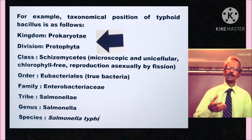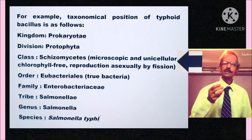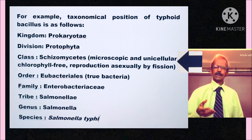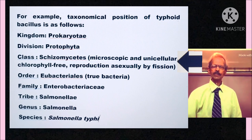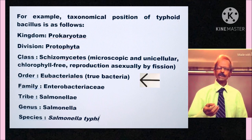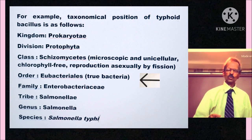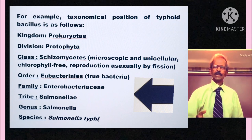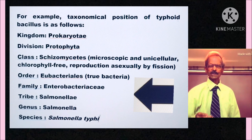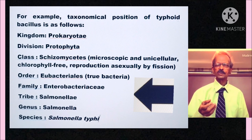Kingdom: Prokaryote. Division: Protophyta. Class: Schizomycetes, meaning microscopic, unicellular, chlorophyll-free and reproduction by asexual fission. Order: Eubacteriales, meaning true bacteria. Family: Enterobacteriaceae. Tribe: Salmonella. Genus: Salmonella. Species: Salmonella typhi.